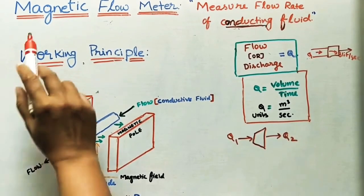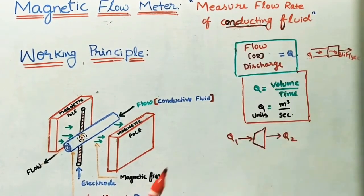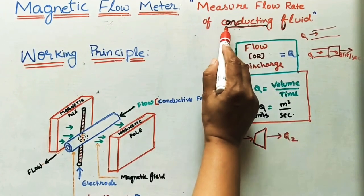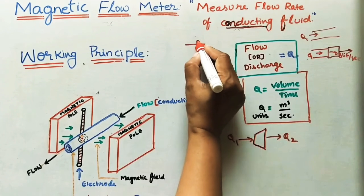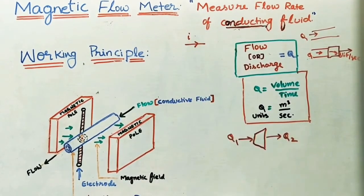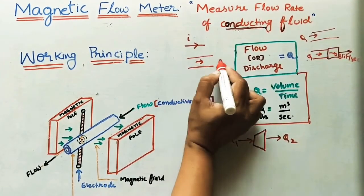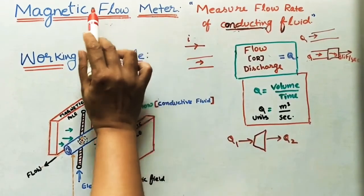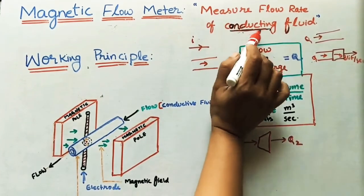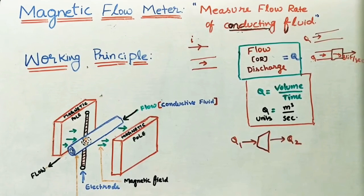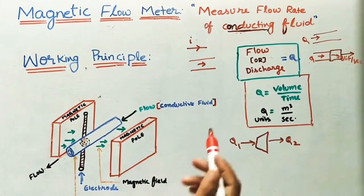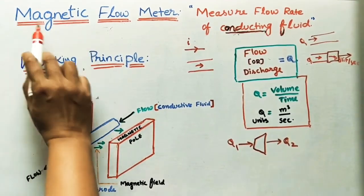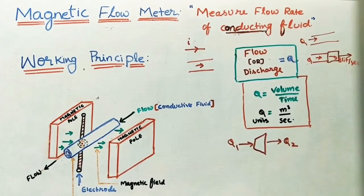In this class we will take the magnetic flow meter. It measures the flow rate of conducting fluid. The flowing fluid in the pipe is a conducting fluid — conducting means it will pass electricity through it. This fluid has a conducting property, so it will pass electricity. For measuring the flow rate of this conducting fluid, we use the magnetic flow meter. We are using two fields — one is the magnetic field — in which this conducting fluid is flowing.